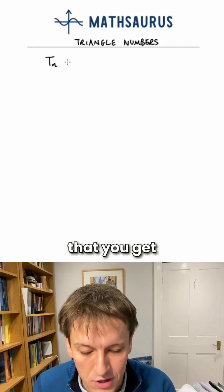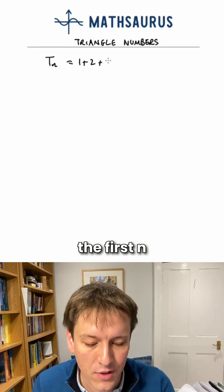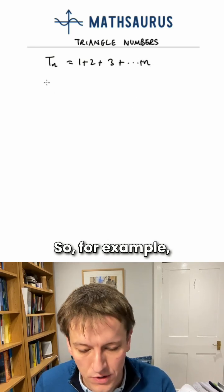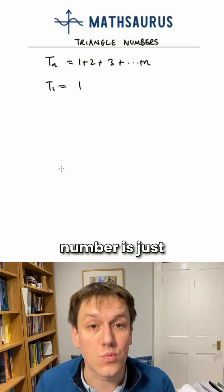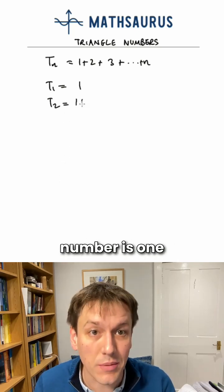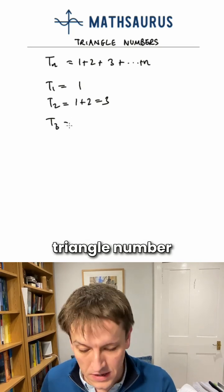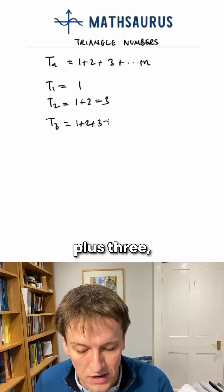The triangle numbers are the numbers that you get from adding together the first n natural numbers. So, for example, the first triangle number is just 1, the second triangle number is 1 plus 2, which is 3, and the third triangle number is 1 plus 2 plus 3, which is 6.